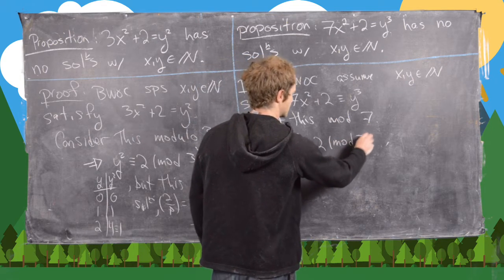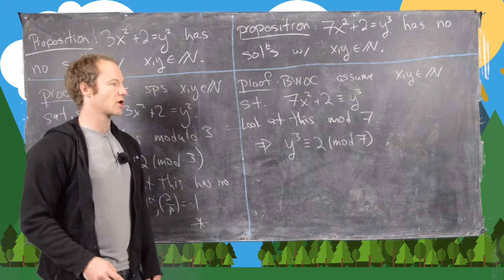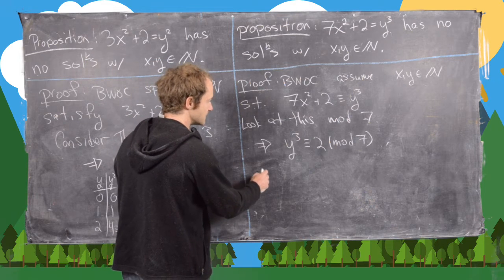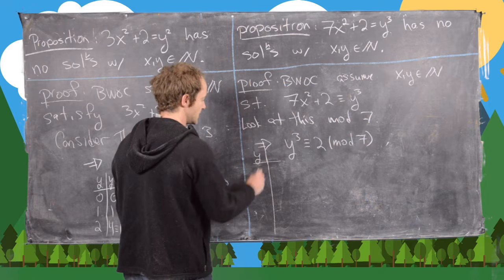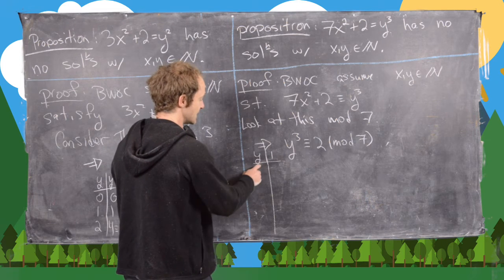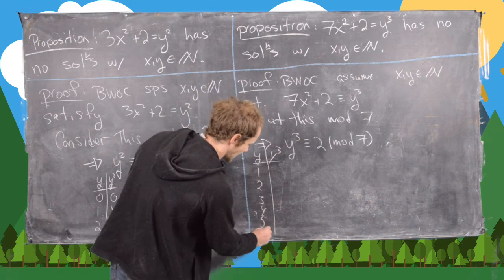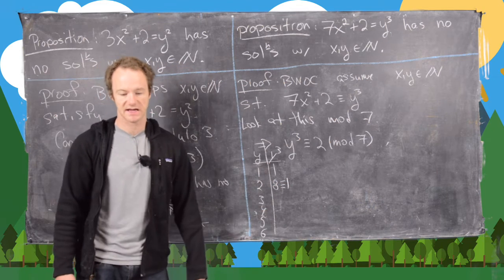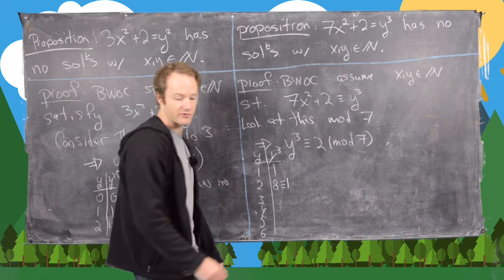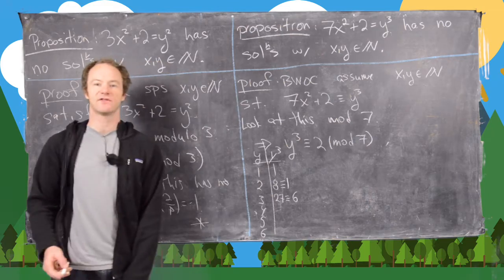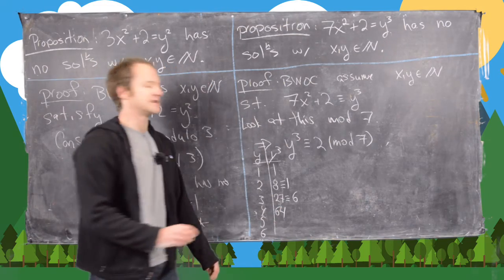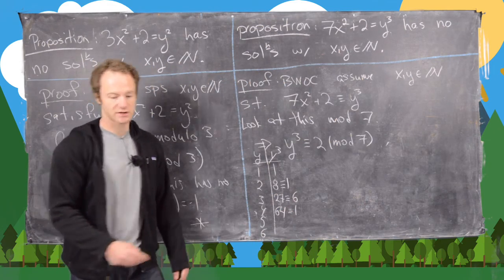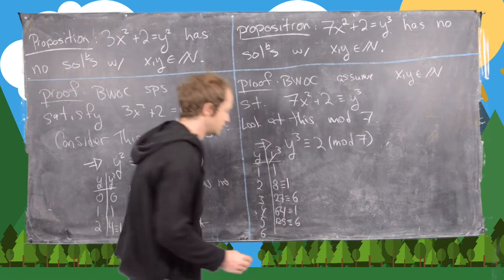We can find all perfect cubes mod 7. There's no point checking 0 since 0³ = 0. So we check y = 1 through 6: 1³ = 1, 2³ = 8 ≡ 1 (mod 7), 3³ = 27 ≡ 6 (mod 7), 4³ = 64 ≡ 1 (mod 7), 5³ = 125 ≡ 6 (mod 7).